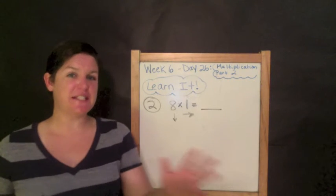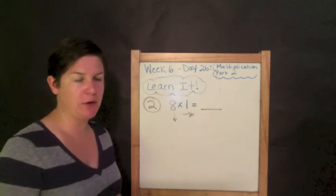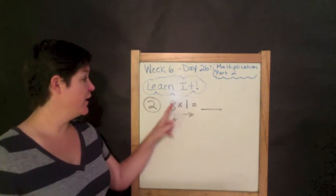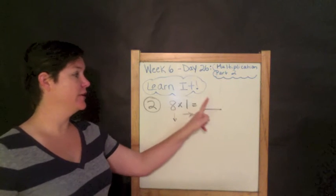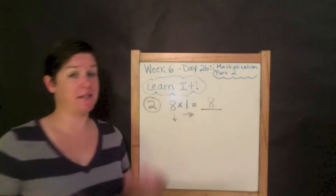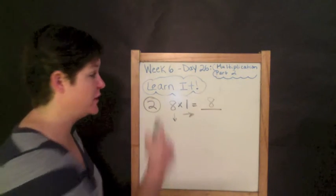Identity property of multiplication states that whenever you have one as a factor, the other factor is the product. So I predict, based on this property, that my answer is going to be eight. But let me show you how to do this with an array.